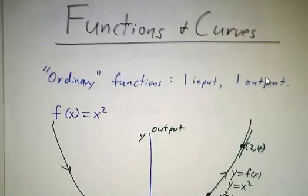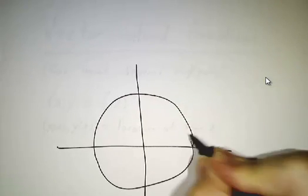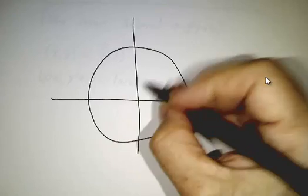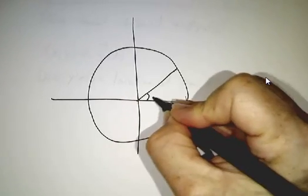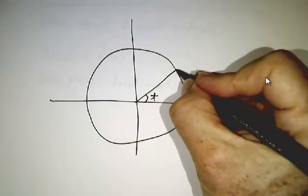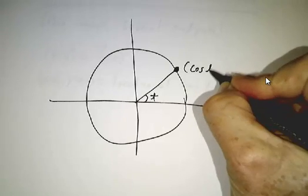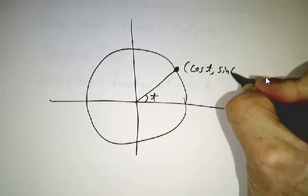If you do that for the circle, for a circle, we can imagine going clockwise around a circle, with speed one, so that after time t, you've got an angle t around the circle. In which case, the coordinates of this point would be cos and sin.